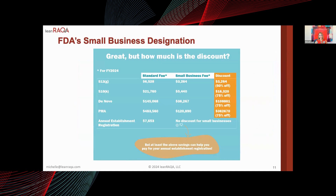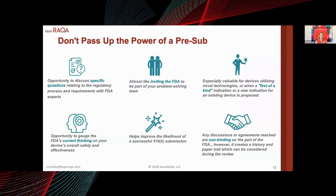The FDA also has a small business designation that can save you 50 to 75% depending on the type of submission. The pre-submission process is a powerful tool to ask FDA specific questions related to your regulatory process and technology. It gives you a snapshot of FDA's current thinking on your product — including guidance documents in draft or being discussed internally — information that is more than what's publicly available about your product.